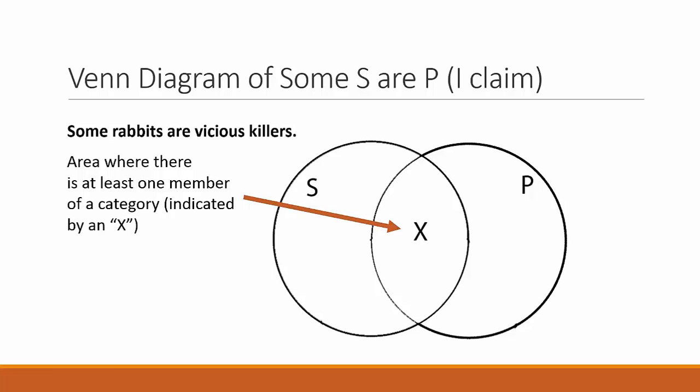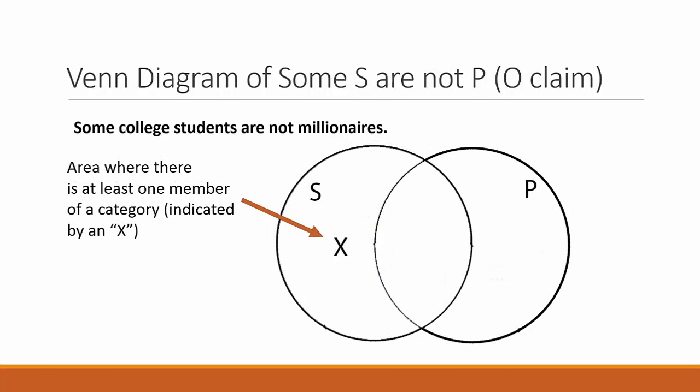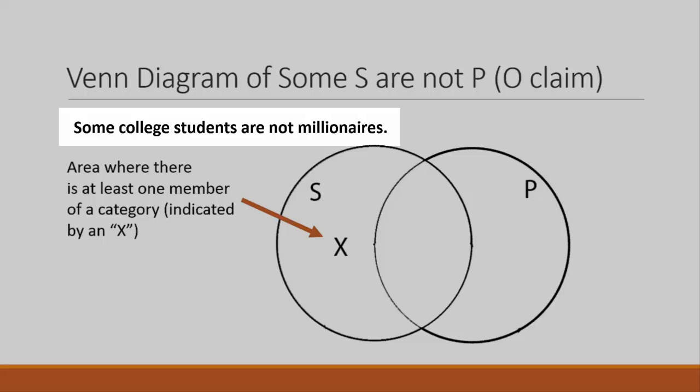Rabbit is the subject, so the claim says that there is at least one rabbit that is a vicious killer. To diagram the O claim some S are not P, the X is placed inside the S category but outside the P category. This indicates there is at least one S that is not a P. For instance, this would be the diagram of the O claim: some college students are not millionaires.